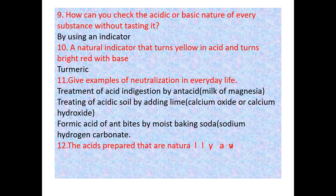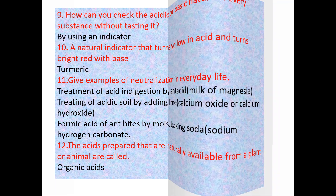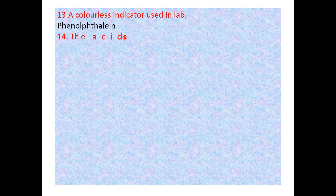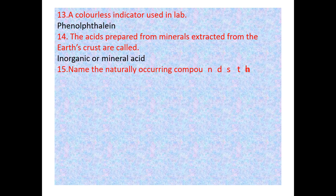Question 12: Acids prepared naturally from plants or animals are called organic acids. Question 13: A colorless indicator used in the lab is phenolphthalein. The acids prepared from minerals extracted from the earth's crust are called inorganic or mineral acids.